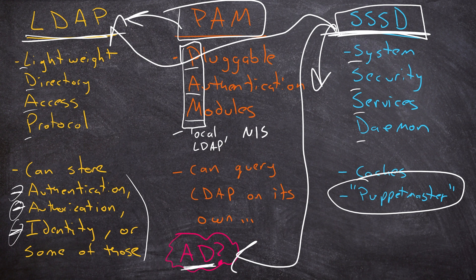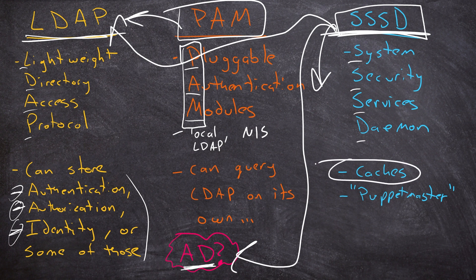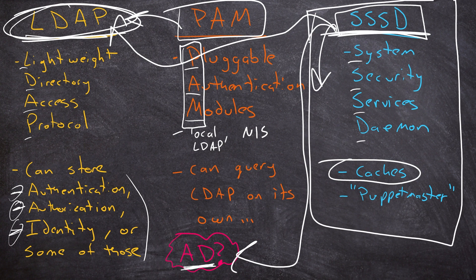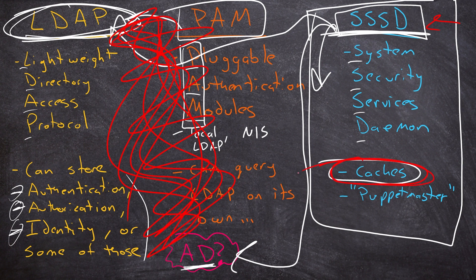One really nice thing that SSSD does is that it caches information. That doesn't seem like a big deal, but if you have your credentials stored on LDAP and your local system is trying to log your user in, but there's a network split and you can't reach that LDAP server, you wouldn't be able to log in. One of SSSD's features is that it caches credentials from whatever remote system it's connected to. So if something goes wrong, you can log in with that cached information. SSSD allows your system to communicate with various other systems to do authentication, authorization, and identity management.